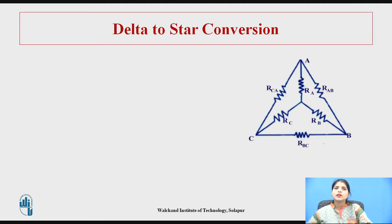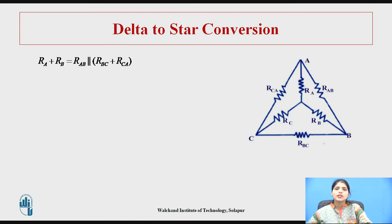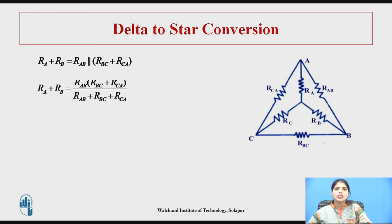Observing the figure, we write the equations. R_A plus R_B are elements of the star network, where R_AB is in parallel with R_BC plus R_CA. Applying the parallel formula and doing cross multiplication, we get Equation 1: R_A + R_B = R_AB(R_BC + R_CA) / (R_AB + R_BC + R_CA).